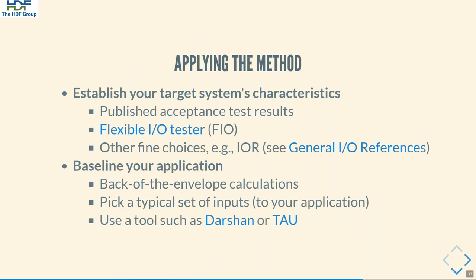To apply this method — for example to establish the target system's characteristics — that work has typically been done for you. Large machines are typically not bought by private individuals; there is a formal acceptance test and a report from the vendor. But if you would like to do your own experiments, tools such as the flexible I/O test FIO or IOR benchmarks let you establish the parameters or characteristics that you might be interested in for your application.